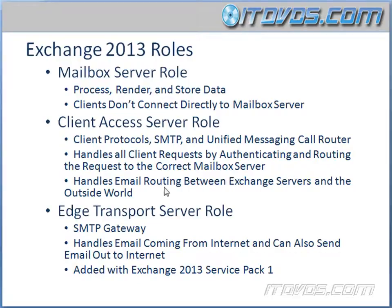The Client Access Server also handles email routing between Exchange Servers and the outside world. So if we open up Outlook and we send an email to somebody else that's not in our organization, like joeblow at hotmail.com, the Client Access Server role is going to help that email get out to the internet.